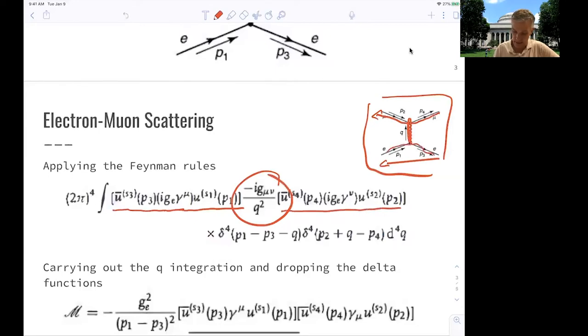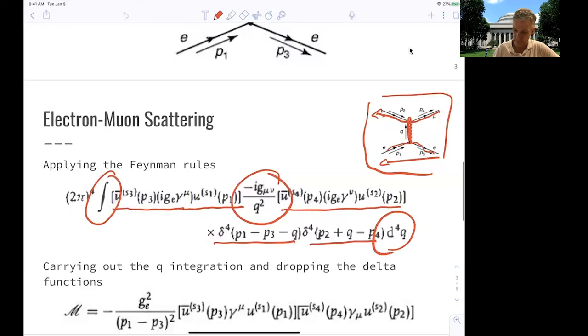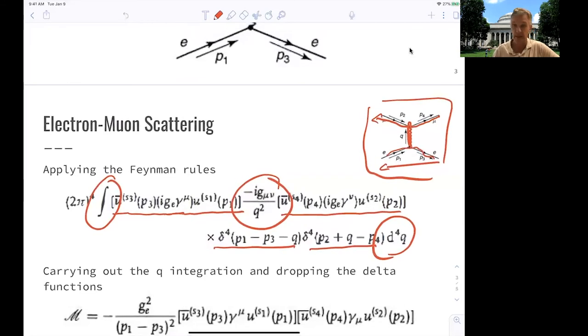For each of those lines, you have to make sure that energy and momentum is conserved via the space of delta functions. And then the last part you have to do is integrate over your momentum. That's already there.